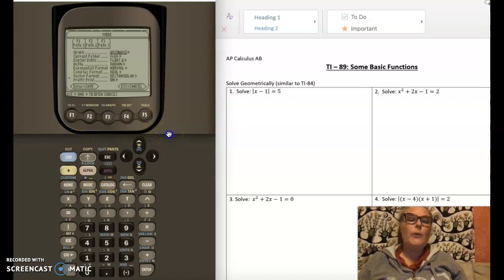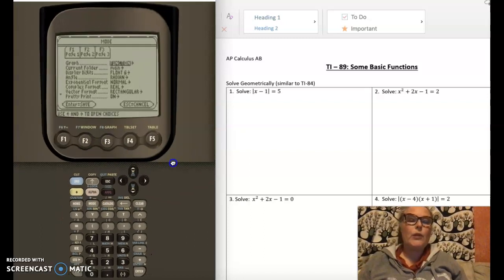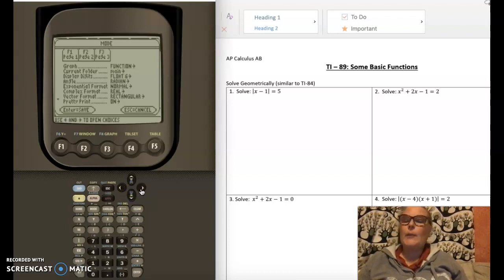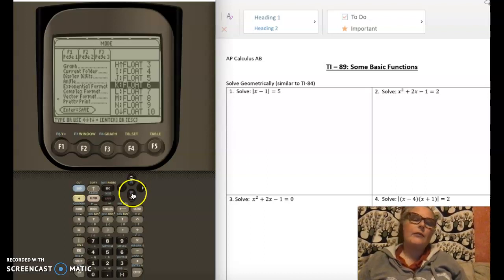I'll show you where that is. Here we're going to go into mode. I'm going to make the screen a little bit bigger here so you can see. Some of the things you can arrow up and down on your navigation tools, just like on the 84. You want to make sure, for example, float tells me how many decimal places you want it to round to.